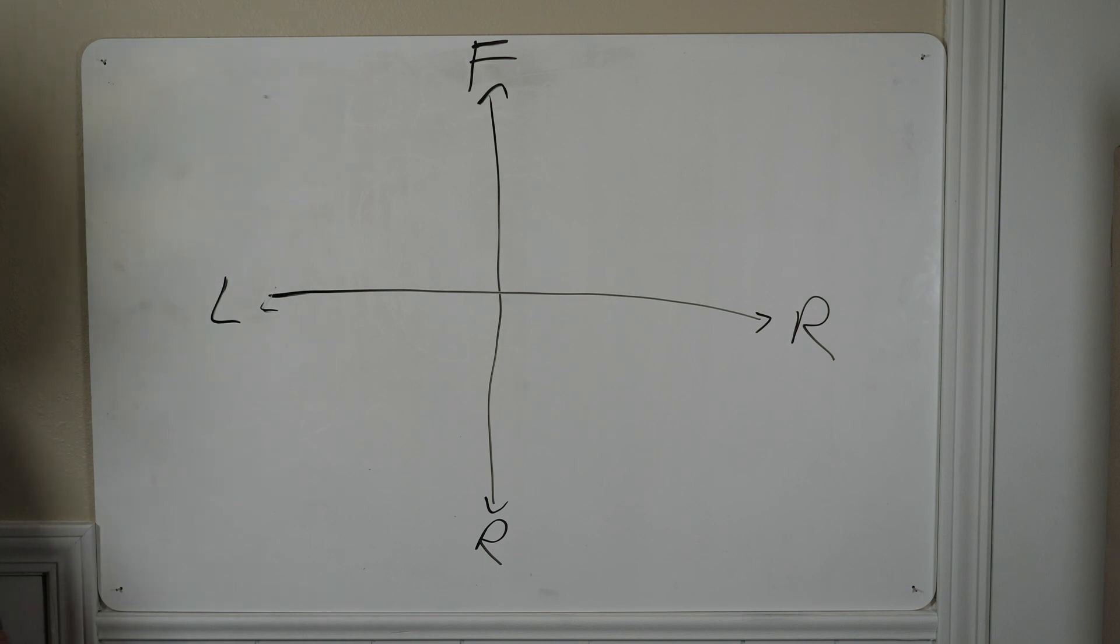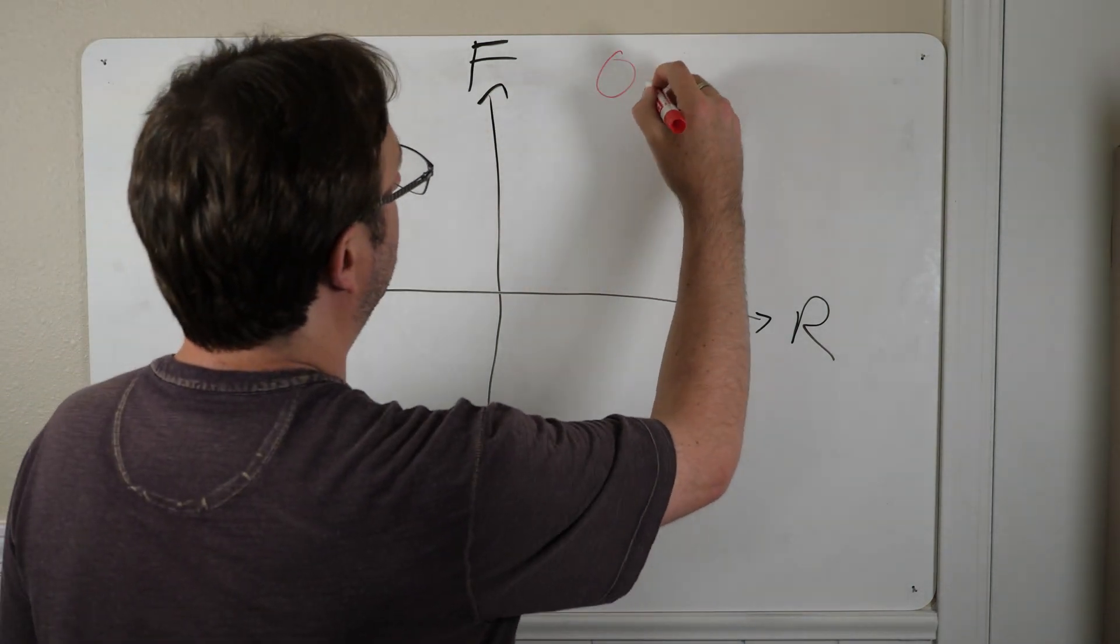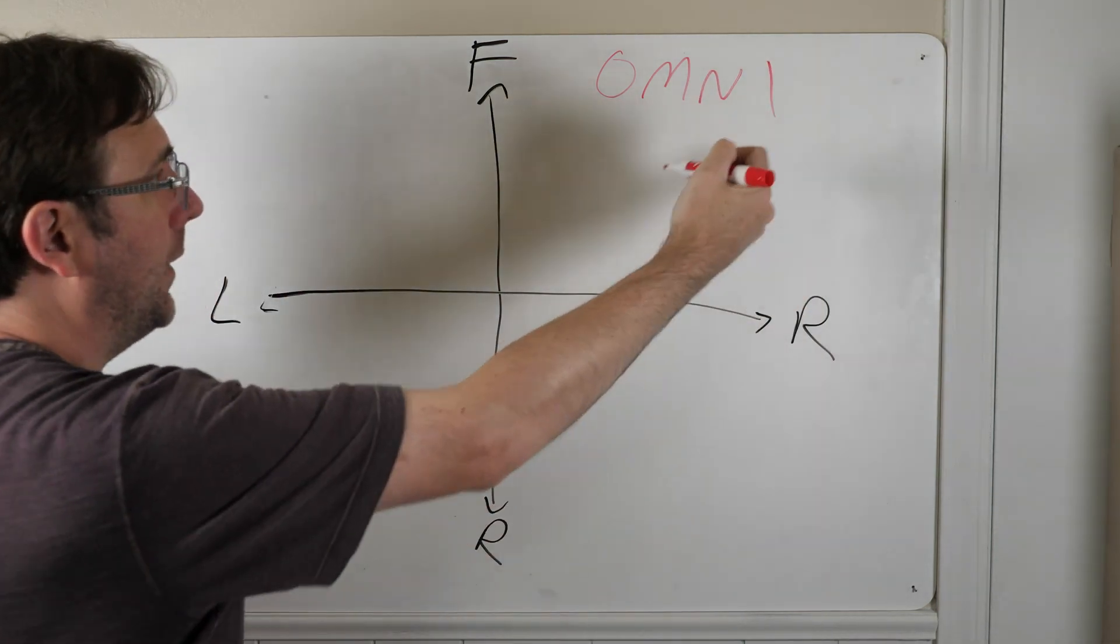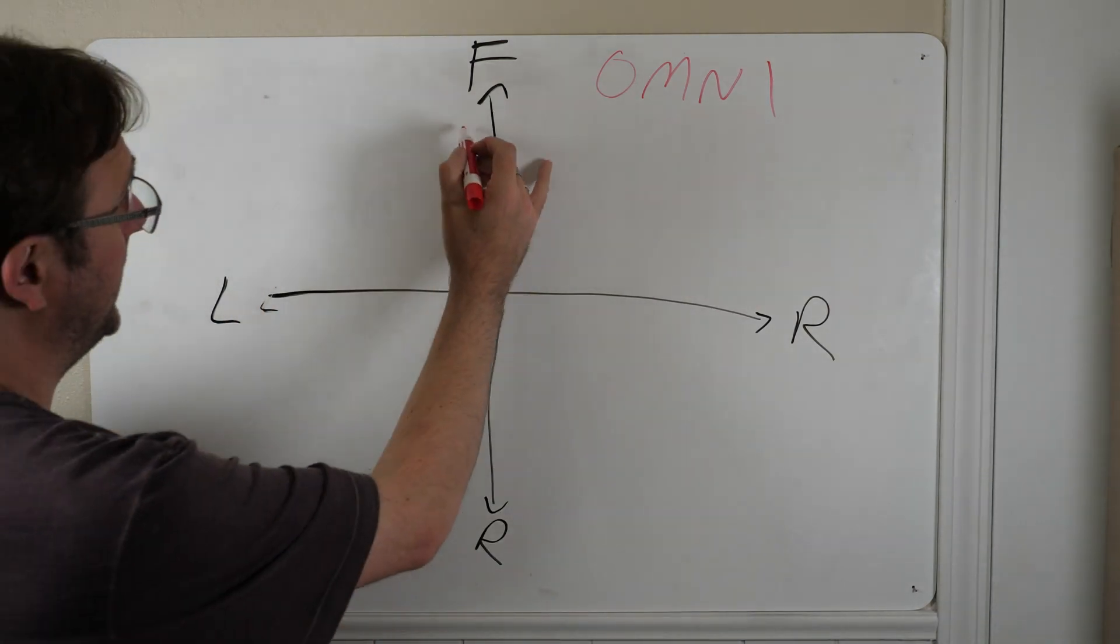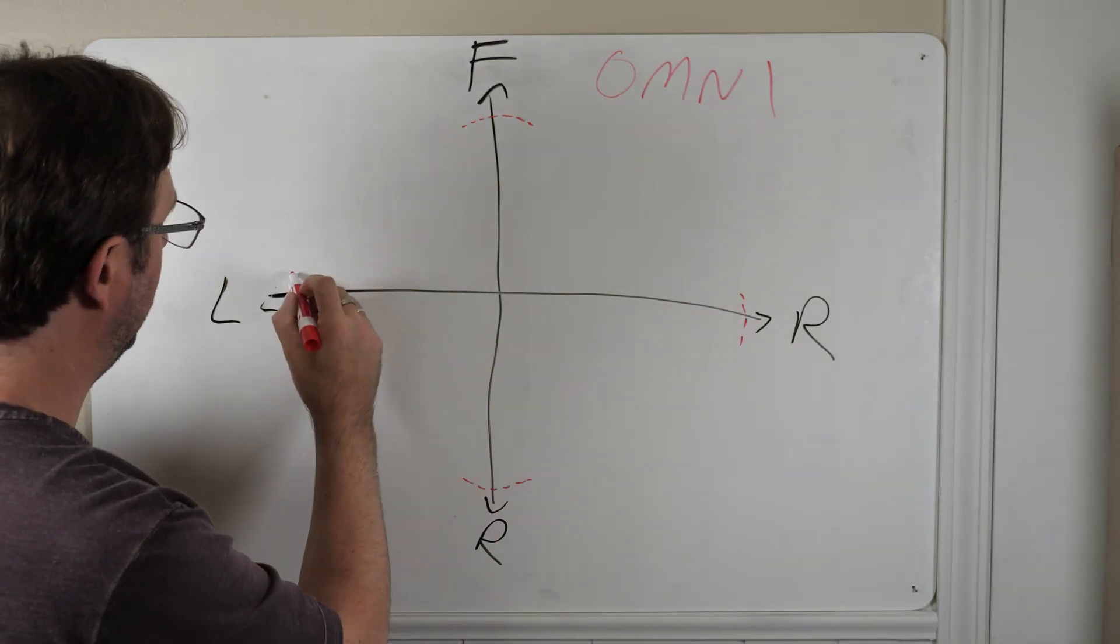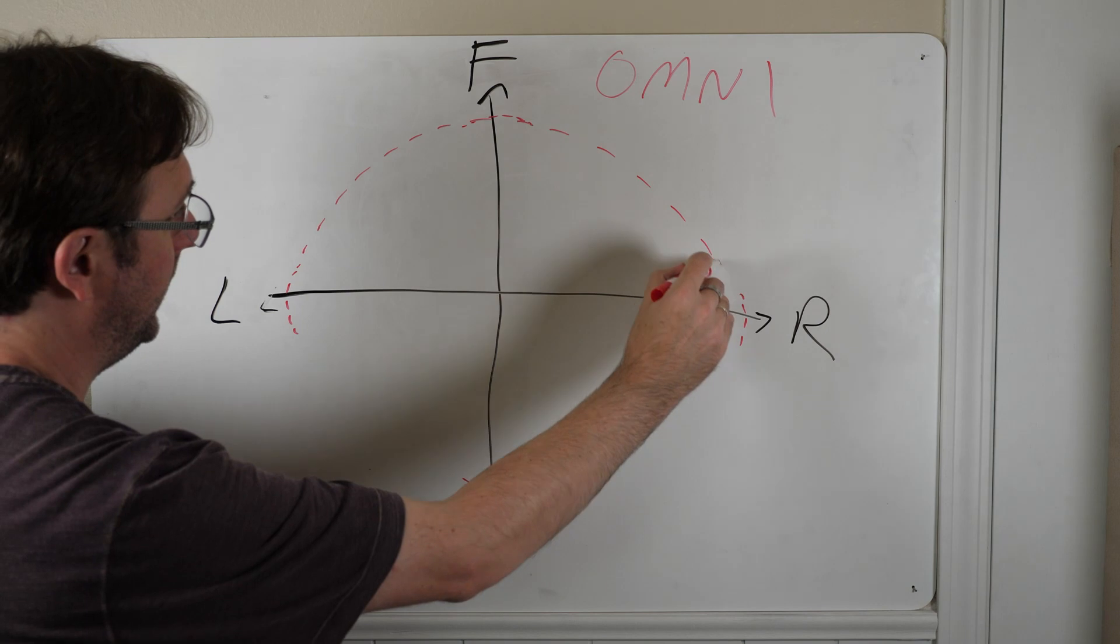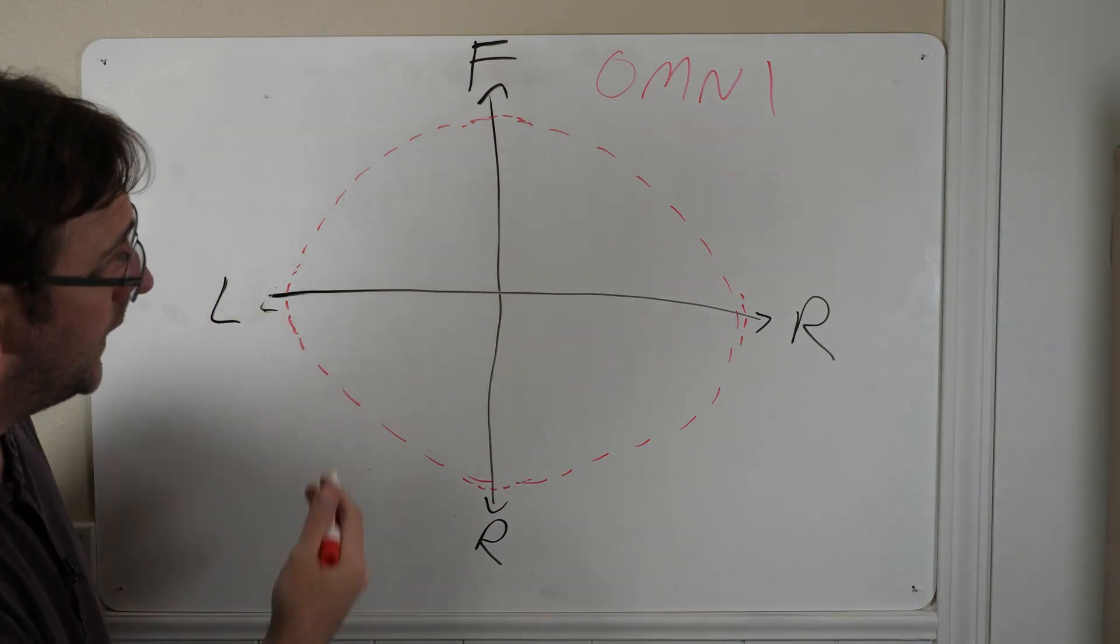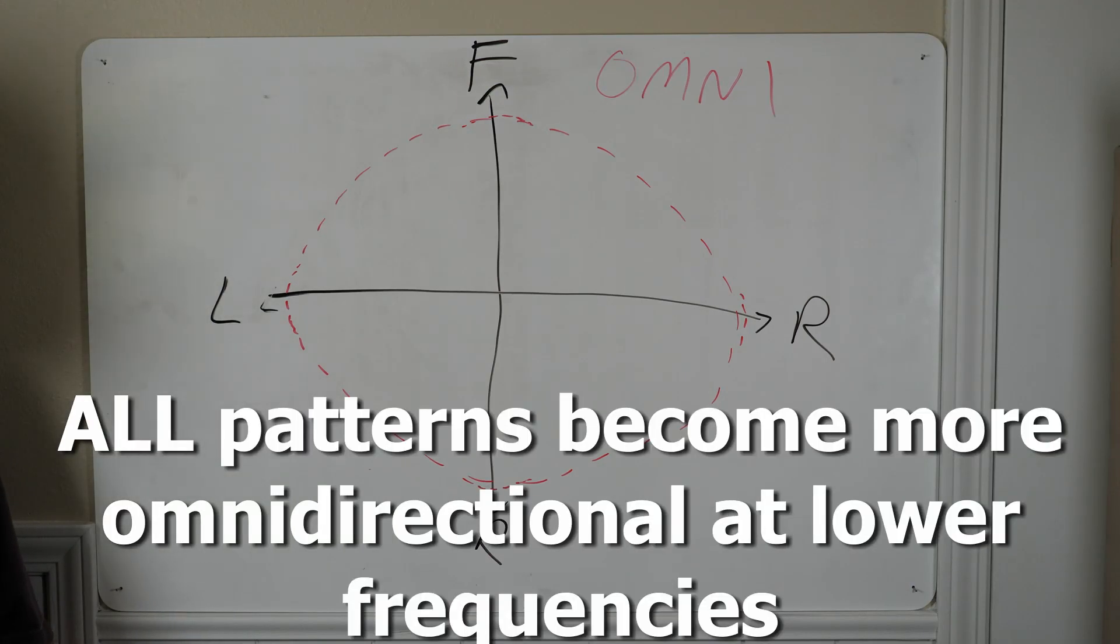We reset our graph here. Let's take a look at another pretty common pickup pattern, and this pickup pattern is called omnidirectional. Omni or omnidirectional means it's equally sensitive all the way around. So you can kind of guess it's pretty darn sensitive in the front, pretty darn sensitive in the rear, pretty darn sensitive on the right, and pretty darn sensitive on the left. So if we fill in our plot points here, we just get a big circle.